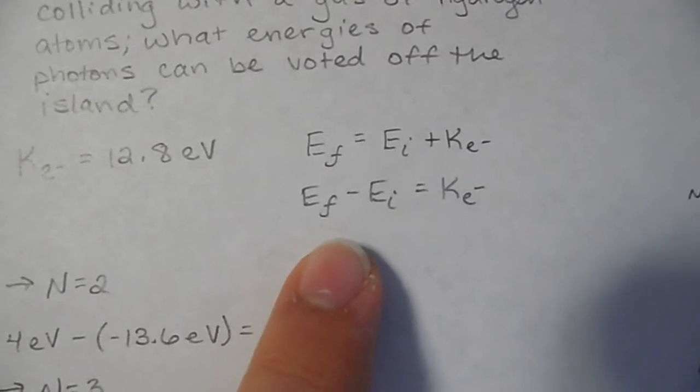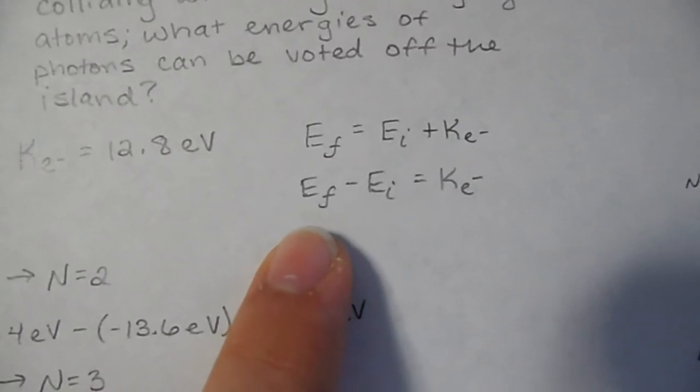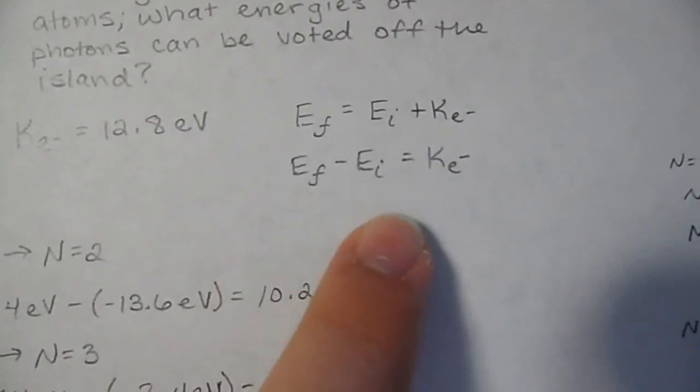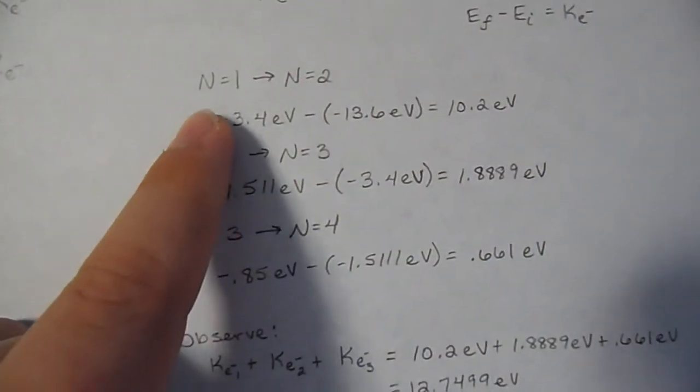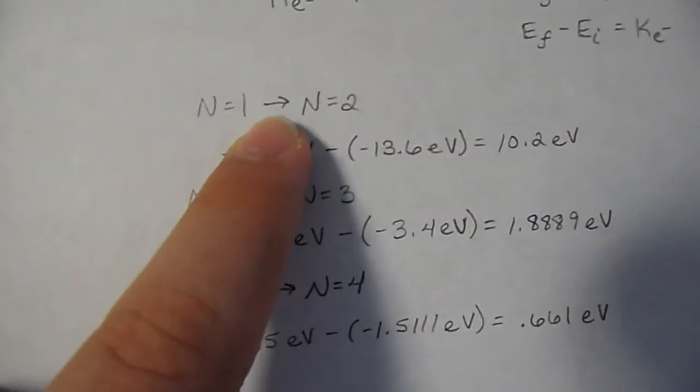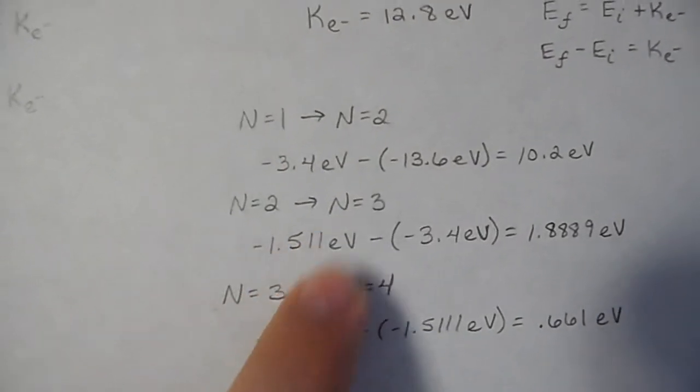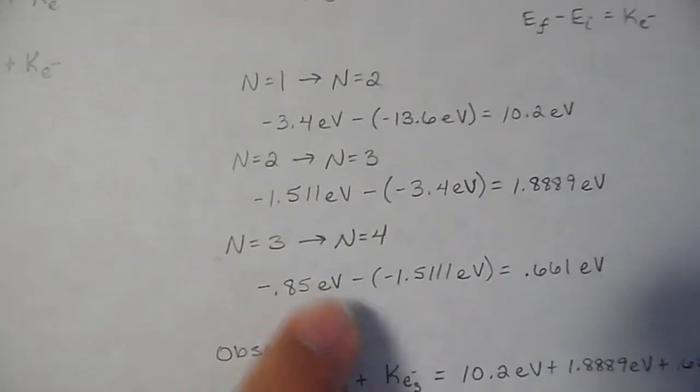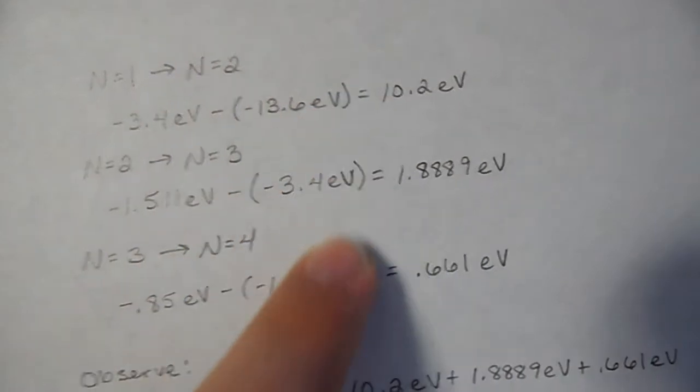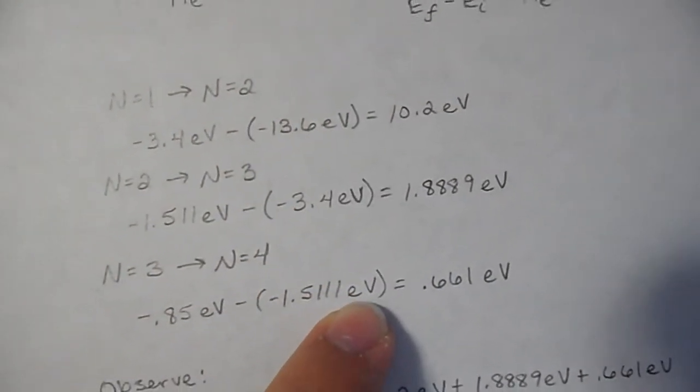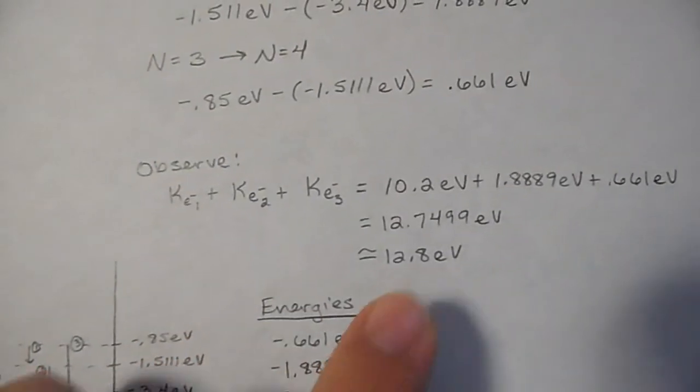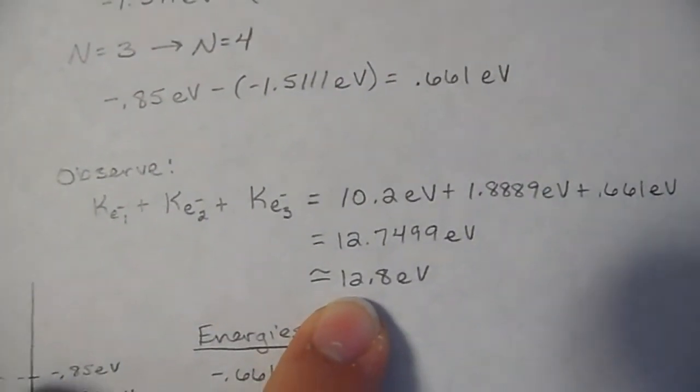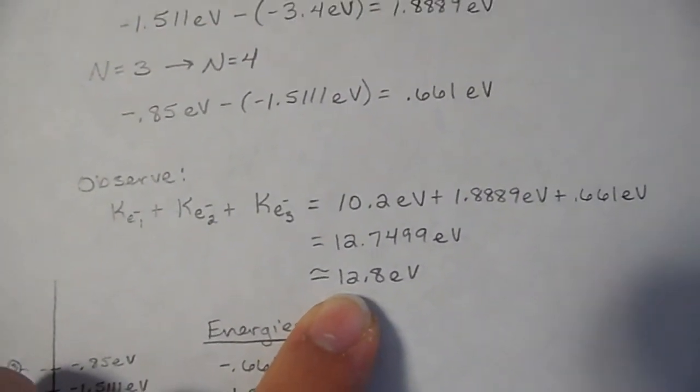Again, using this energy principle and rearranging it so that we can plug in final minus initial gives us our kinetic. Using from n1 to n2, n2 to n3, and n3 to n4, we get these energy levels, or these amounts of kinetic energy, and when we add these together, we get the 12.8 electron volts.